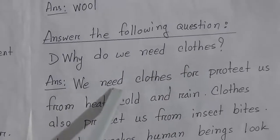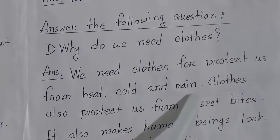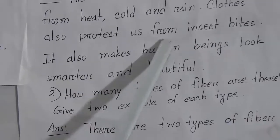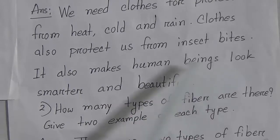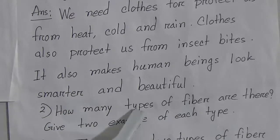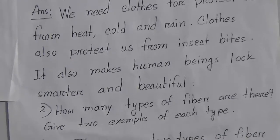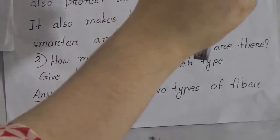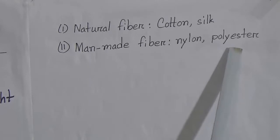Now question and answer section. Number one: Why do we need clothes? Answer: We need clothes to protect us from heat, cold, and rain. Clothes also protect us from insect bites. They also make human beings look smarter and beautiful. Number two: How many types of fiber are there? Give two examples of each type. Answer: There are two types of fiber. Number one is natural fiber — examples are cotton and silk. Number two is manmade fiber — examples are nylon and polyester.